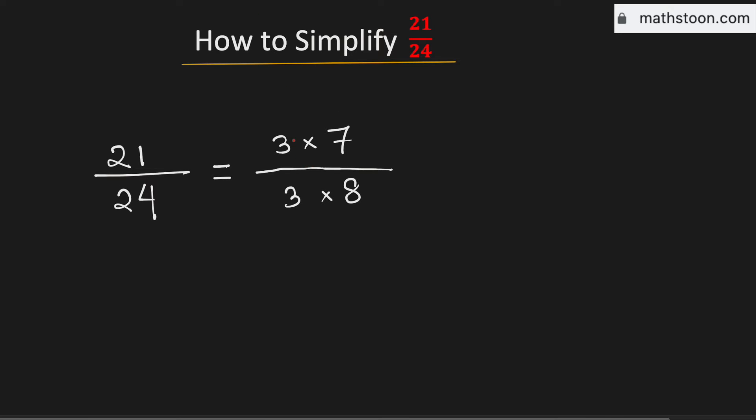Now we can cancel 3 out because it is present in both the numerator and the denominator. So it is now equal to 7 divided by 8.